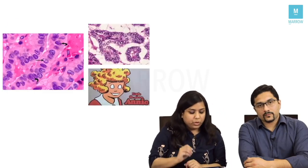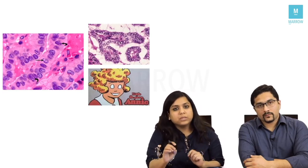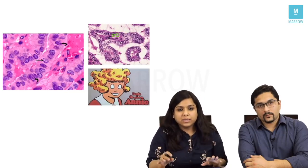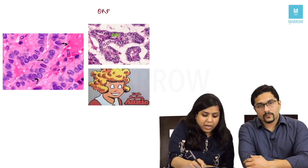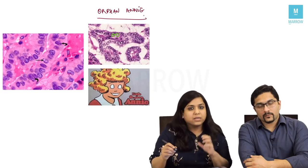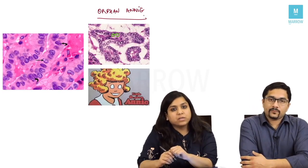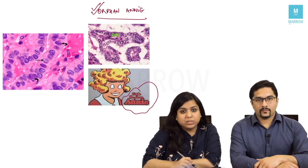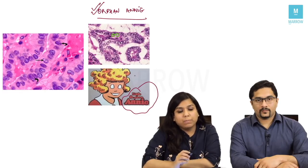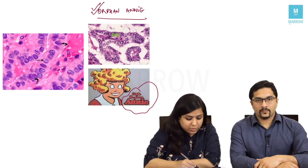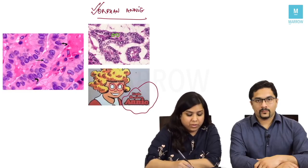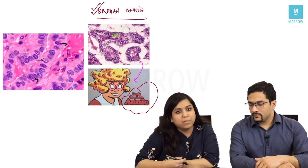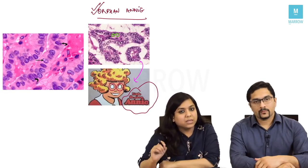On the high-power view, the papillae are not lined by normal thyroid follicular cells. Instead they are lined by cells with clear nuclei — no material visible inside. These are called orphan Annie nuclei, or optically clear nuclei, and are a characteristic feature of papillary carcinoma of thyroid. The name comes from the cartoon character Orphan Annie, whose cartoonist forgot to draw a pupil inside the eyes — just like these clear nuclei.